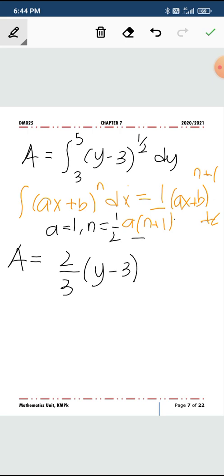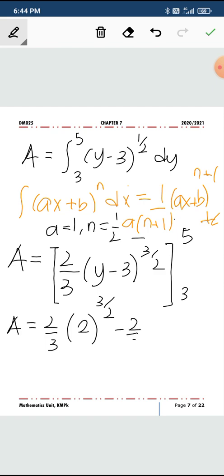So we get 2 over 3 times (y minus 3) to the power of 3 over 2, and then you write down your limits. Substitute. As you substitute, 5 minus 3 becomes 2 to the power of 3 over 2, minus zero. When you use your calculator, you will get this value: 4 over 3 times square root of 2 unit squared.